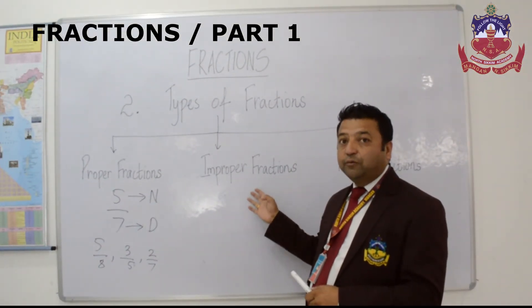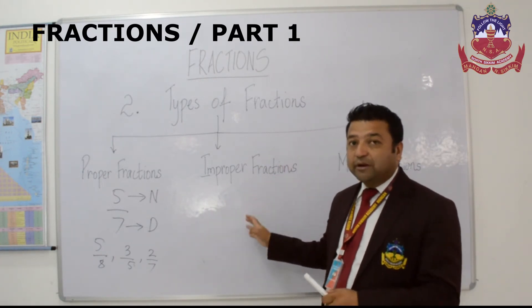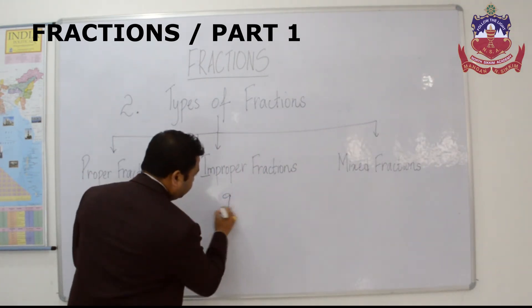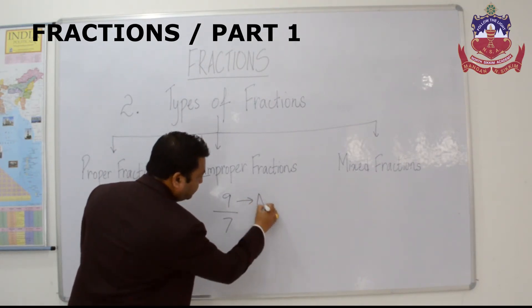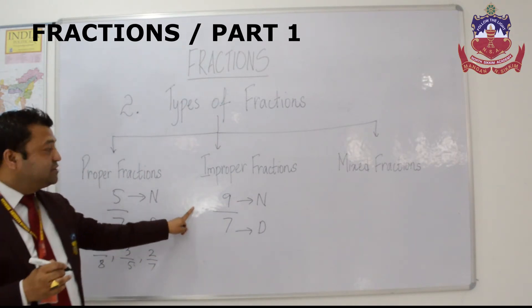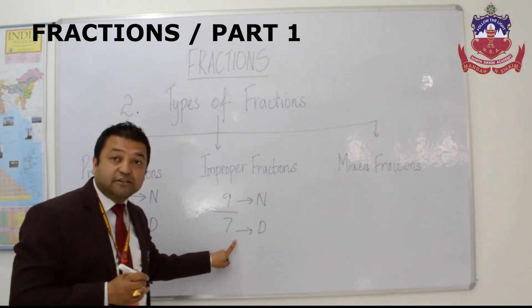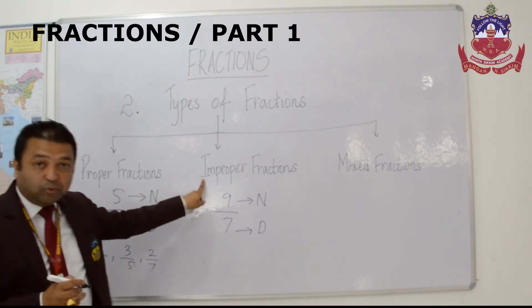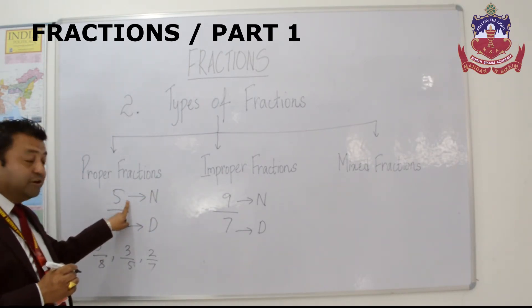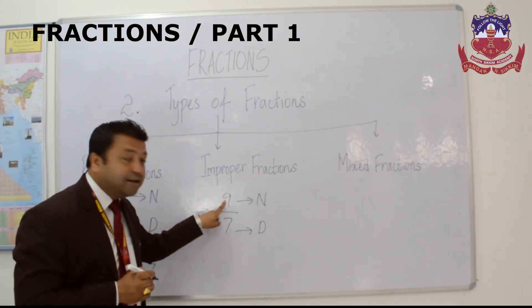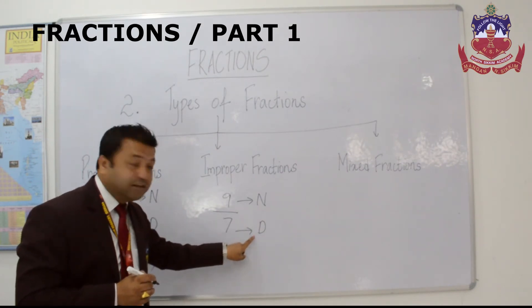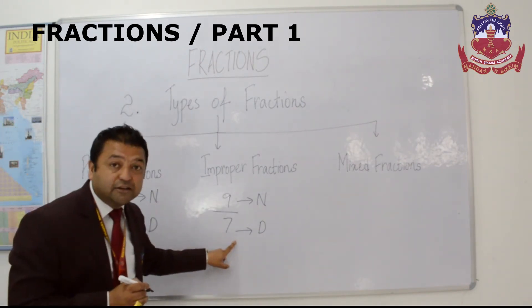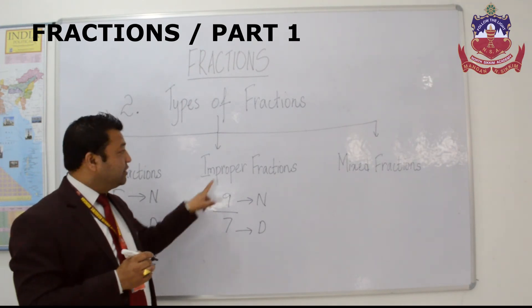Improper fraction: when the numerator is bigger than the denominator, that type of fraction is called improper fraction. In this case, 9 is the numerator and 7 is the denominator. When you observe properly, you can see the difference between proper fraction and improper fraction. In proper fraction the numerator was smaller, but in this case 9 is bigger than 7. So when the numerator is bigger than the denominator, that type of fraction is called improper fraction.